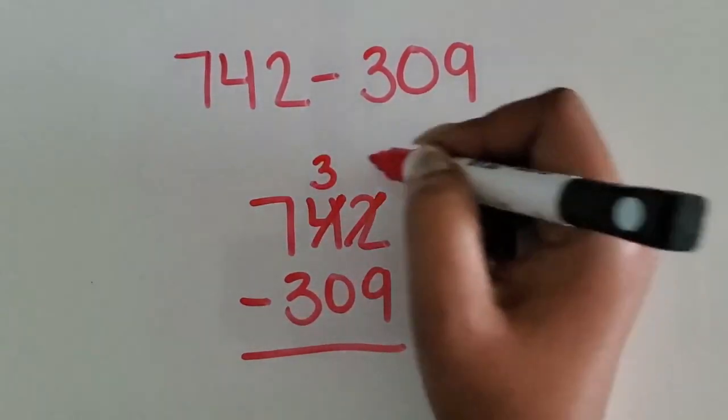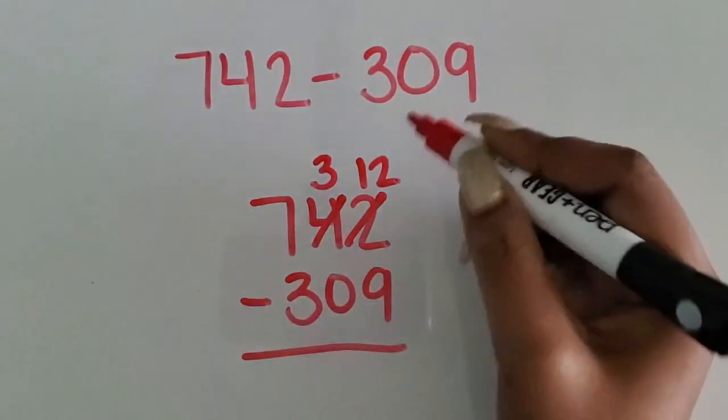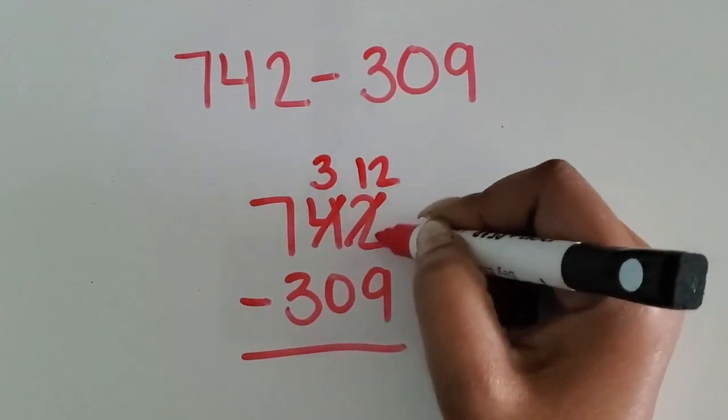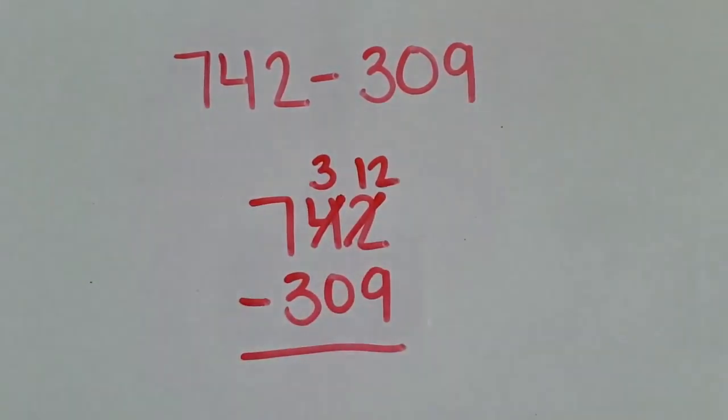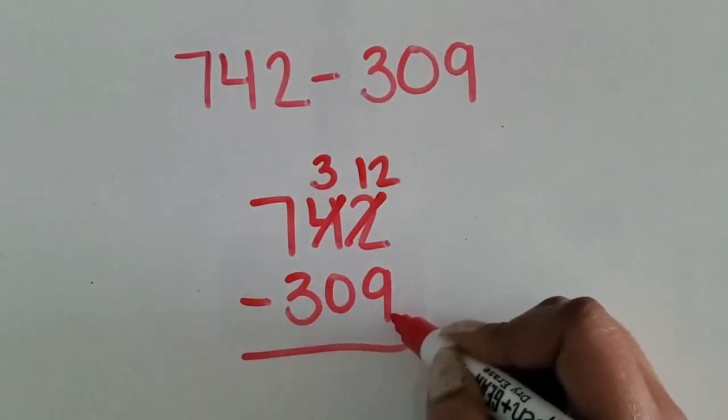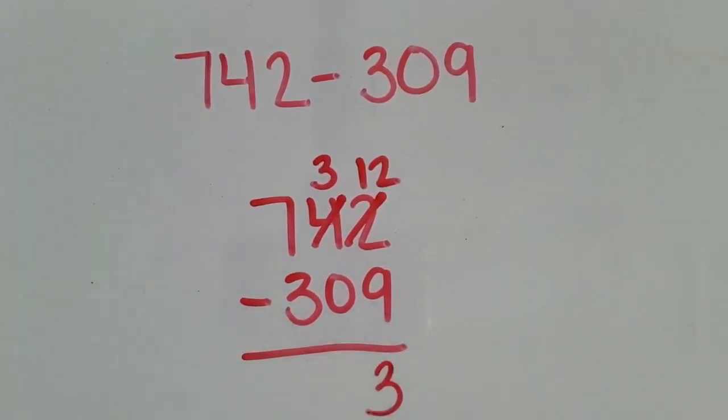I will be left with three tens, and then I will have twelve ones because ten ones plus the two ones I already have is twelve. Twelve ones minus nine ones is three ones.